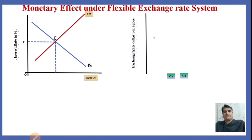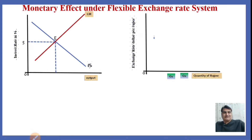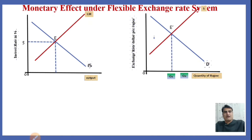In the other diagram, the exchange rate in dollars per rupee is shown on the y-axis, whereas the quantity of rupee is shown on the x-axis. D is the demand curve for rupee, and S is the supply of rupee. The demand and supply of rupee in the foreign exchange market are equal at E dash, where the exchange rate is determined at 0.2 dollars.